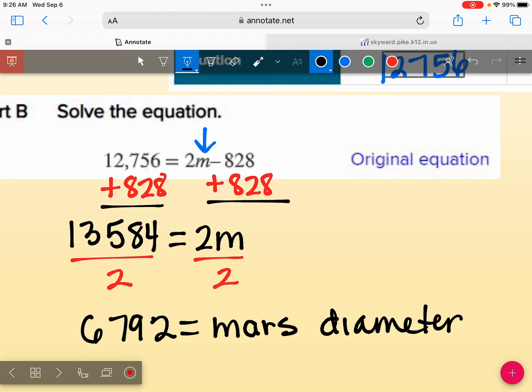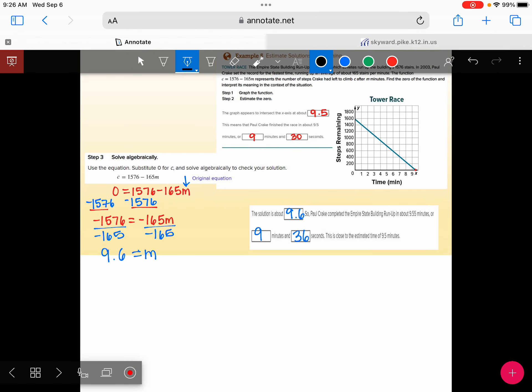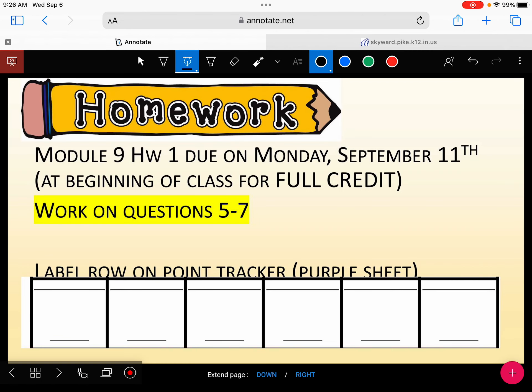Alright, go ahead and take out homework 1. So you should have finished numbers 1 through 4 yesterday. Did I give you those answers to the first four questions? Okay. Today on homework 1, I want you to work on numbers 5, 6, and 7. So get 5, 6, and 7. If you need help, feel free to bring it up. I will help you. Thank you.